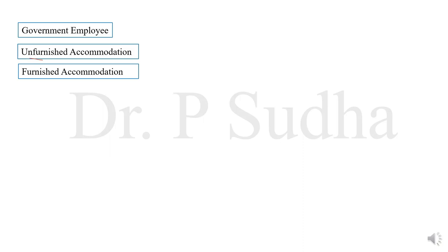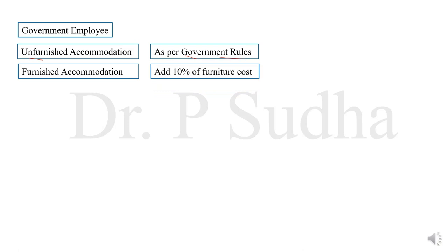If the employer is giving an unfurnished accommodation to a government employee, then the value of rent-free accommodation is the amount determined as per government rules. If furnished accommodation is provided, then we have to add 10% of the cost of furniture to the value derived under the unfurnished accommodation calculation.